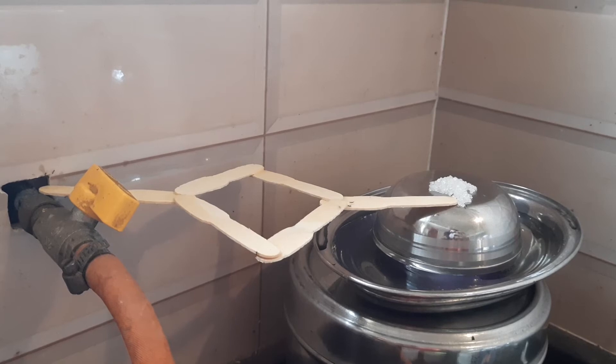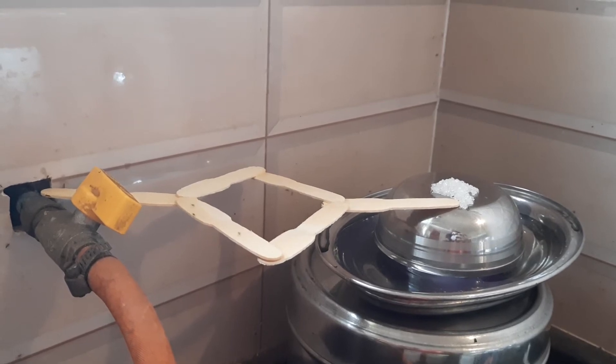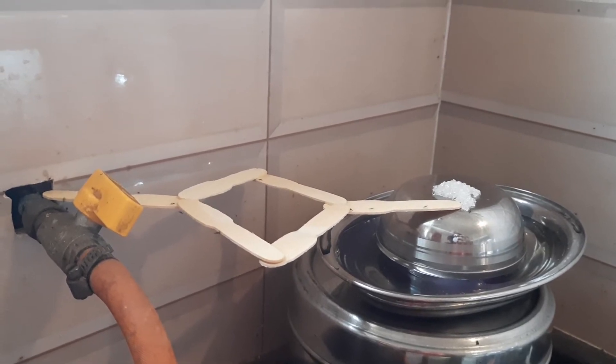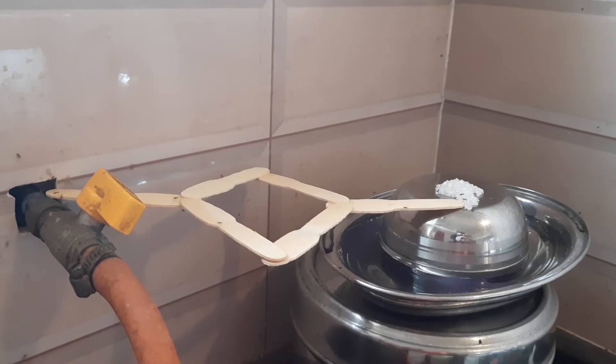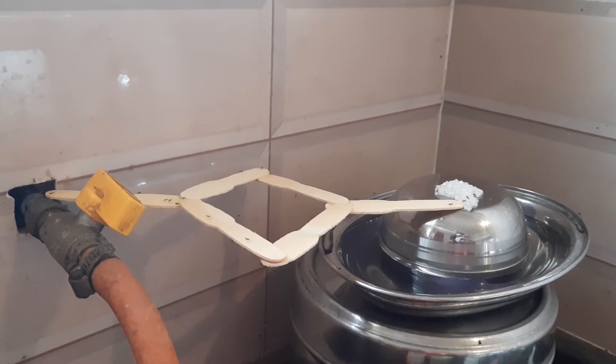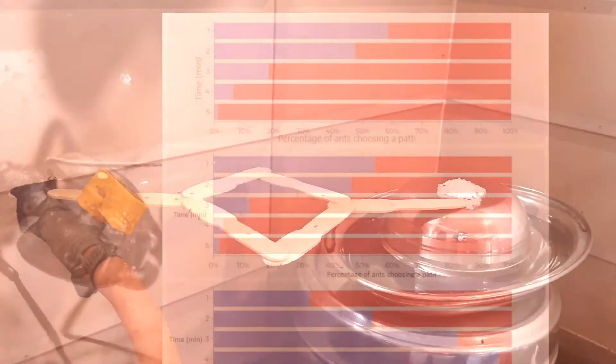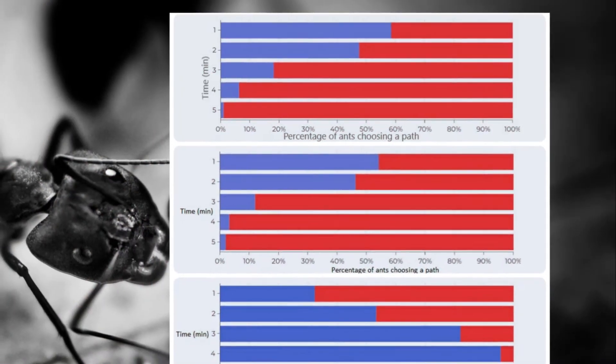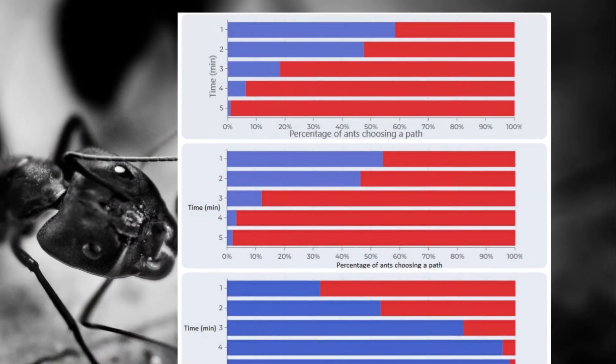Each trial of the experiment was conducted for a period of five minutes. From the videos, the number of ants choosing each path was calculated for every minute. Here you can see the graphs plotted for the percentage of ants choosing each path during different time periods.